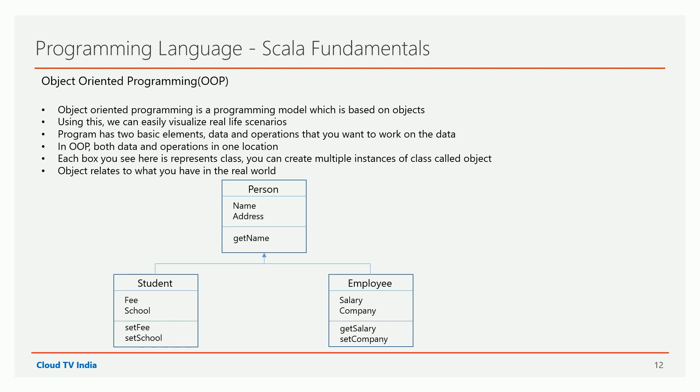Let's start with object-oriented programming, shortly called OOP. Object-oriented programming is a programming model which is based on objects, and using it we can visualize real-world scenarios. For example, if you take a person class in this diagram, there are three boxes representing three classes. The person class at the top is the base class or super class, and student and employee are the derived classes or subclasses — also called child classes.